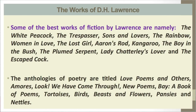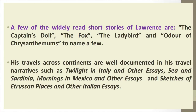The anthologies of poetry are titled Love Poems and Others, Amores, Look We Have Come Through, New Poems, Bay: A Book of Poems, Tortoises, Birds Beasts and Flowers, Pansies, and Nettles. A few of the widely read short stories of Lawrence are The Captain's Doll, The Fox, The Ladybird, and Odour of Chrysanthemums, to name a few. His travels across continents are well documented in his travel narratives, such as Twilight in Italy and other essays, Sea and Sardinia, Mornings in Mexico and other essays, and Sketches of Etruscan Places and other Italian essays.